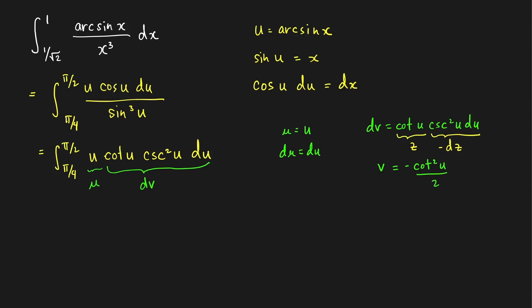By integration by parts, we have μv, which equals −(u/2)·cotangent²(u). Since this is a definite integral, we evaluate from π/4 to π/2, minus the integral of v dμ, which equals −(1/2)·cotangent²(u) du, again from π/4 to π/2.